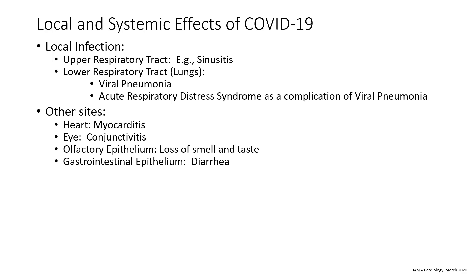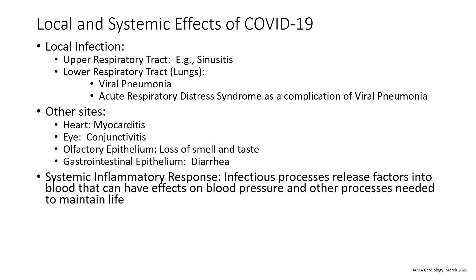The virus may also infect the lining of the eyes, causing conjunctivitis, and patients may have a pink appearance of the whites of their eyes. Infection of the olfactory epithelium — located high up in the nose where smell occurs — can result in loss of smell and taste. Infection of the gastrointestinal epithelium can cause diarrhea, which is important because patients with COVID-19-associated diarrhea may pass the infection to others. A systemic inflammatory response can also occur, releasing factors into the blood that affect blood pressure and other life-sustaining processes. Some patients also experience cardiovascular complications, particularly those with underlying conditions who lack the reserves to handle the cardiovascular stress of a COVID-19 infection.